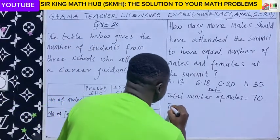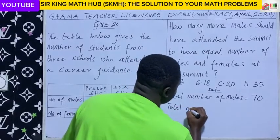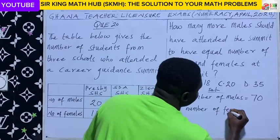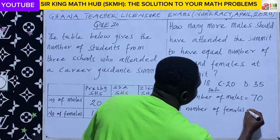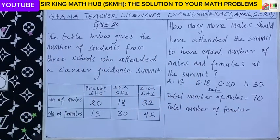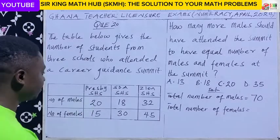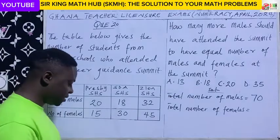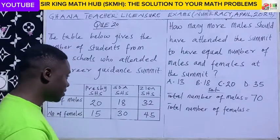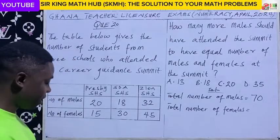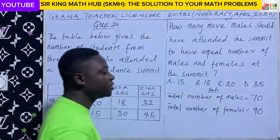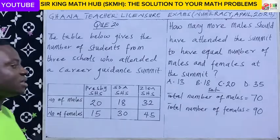Now the total number of females. There were 15 females from Presby SHS, plus 30 females from SDSHS, plus 45 females from Zion SHS. So 90 females were present.